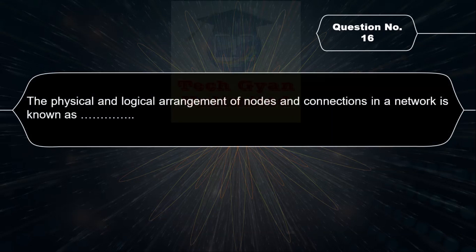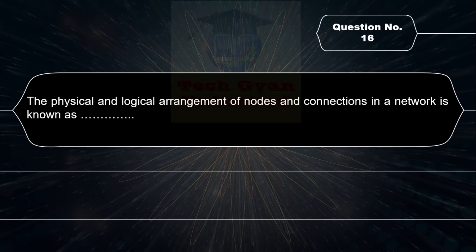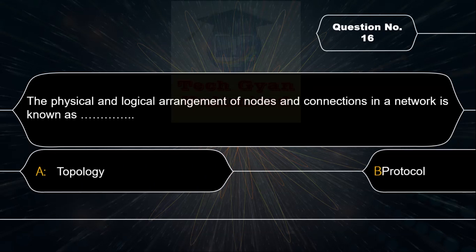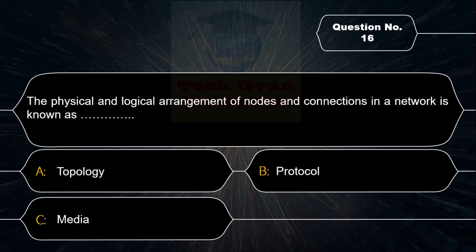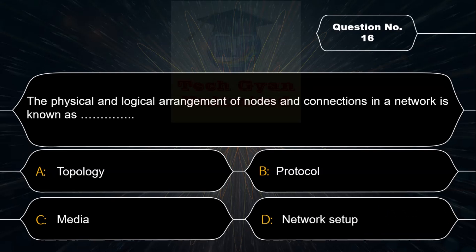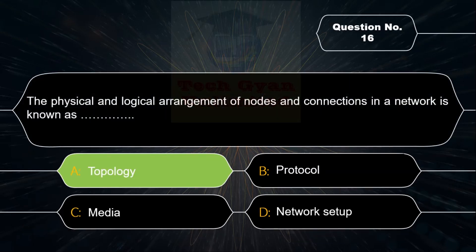The physical and logical arrangement of nodes and connections in a network is known as: Option A: Topology, Option B: Protocol, Option C: Media, Option D: Network Setup. Correct answer is Option A — the physical and logical arrangement of nodes and connections in a network is known as Topology.